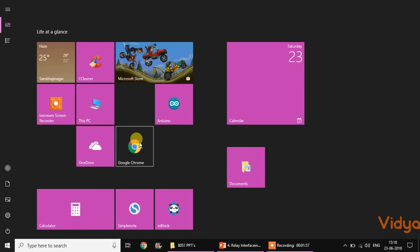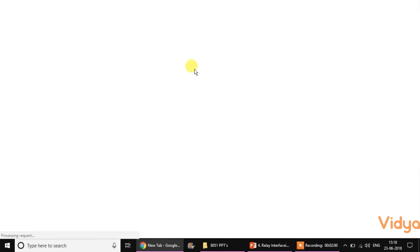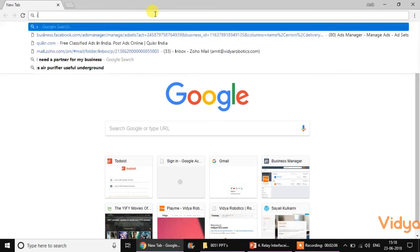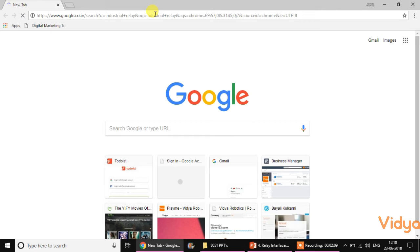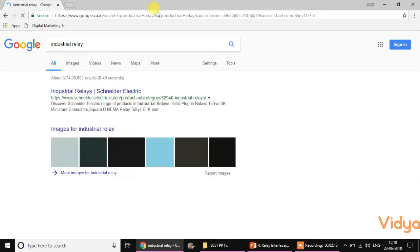The relays vary according to their usages and according to their application areas. So an industrial relay is bigger in size, it looks bigger as well as it allows more current to flow through it.